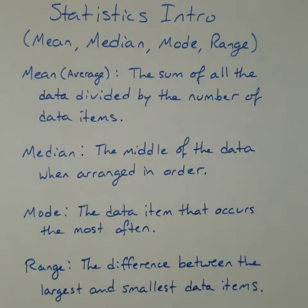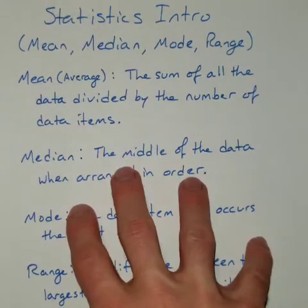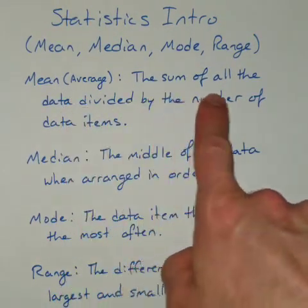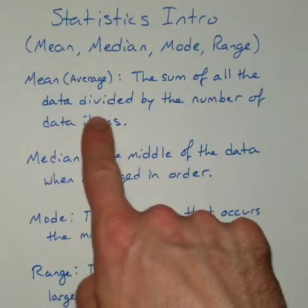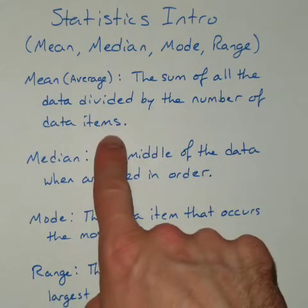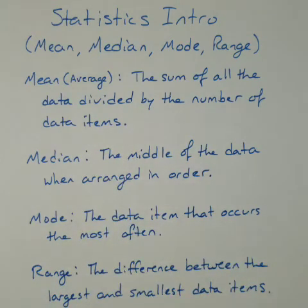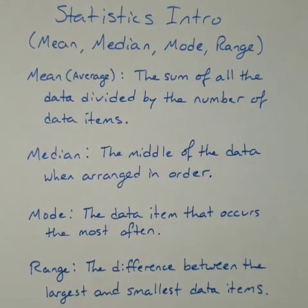We're going to look at four different things. The mean, which is the average, same thing, they're synonymous words. And we've seen this before. It's just the sum of all the data divided by the number of data items. So if you get a list of numbers, a set of data, you add up all the numbers and then divide by the number of numbers.